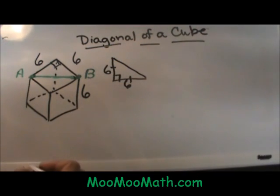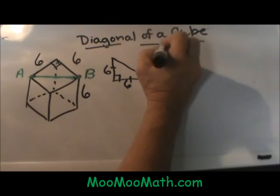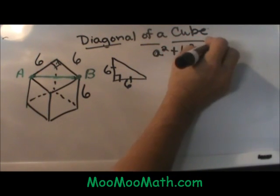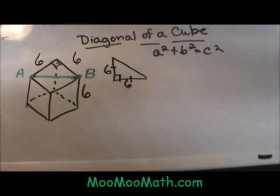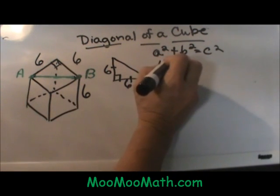This triangle is a 45-45-90 so you can do one of two things. You can use the Pythagorean Theorem A squared plus B squared equals C squared, or you can use your shortcut rules for 45-45-90.